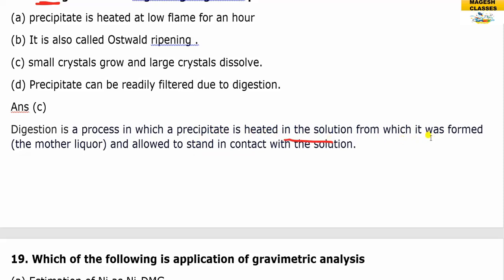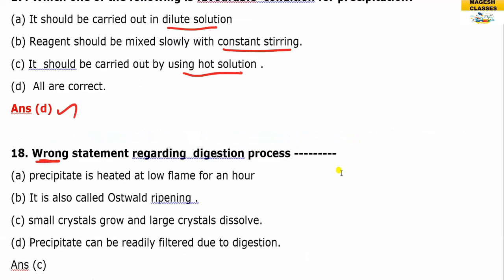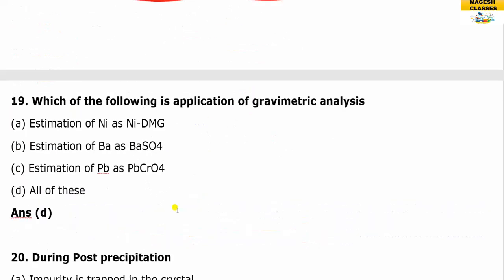Regarding digestion: it is the process where the precipitate is allowed to remain in the mother liquor — the solution from which it was precipitated — and allowed to stand in contact with that solution. Small crystals dissolve and large crystals grow. This is also known as Ostwald ripening.